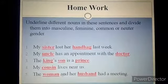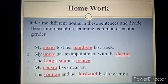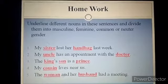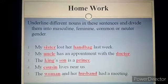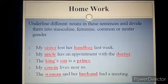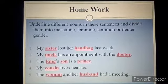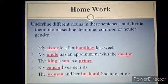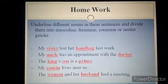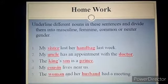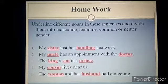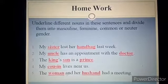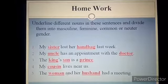In the next sentence, 'My uncle has an appointment with the doctor,' the two highlighted words are nouns. The word uncle is masculine gender because it has its feminine form, which is aunt. The word doctor — can you tell me which type of gender it is? It is common gender, because we use it for both feminine and masculine.